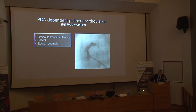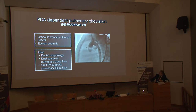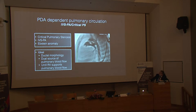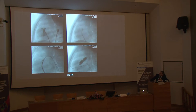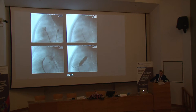To show some examples: critical pulmonary stenosis, IVS pulmonary atresia, and Ebstein's anomaly are the ideal morphologies for ductal stenting. In this patient with IVS pulmonary atresia, you can see the ductus is almost closing — a stent is placed and it looks like a BT shunt. A few months later, perforation of the valve can also be performed, and the stent can be redilated for an additional six months of palliation.